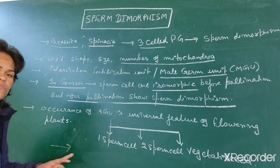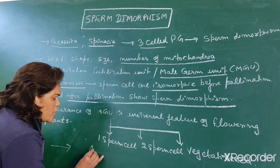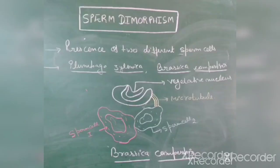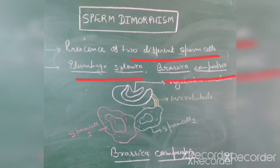Sperm dimorphism is also present in the case of aloe vera. Sperm dimorphism means the presence of two different sperm cells. These sperm cells may differ with respect to number, size, and shape of mitochondria. In the case of Plumbago zeylanica and Brassica campestris, there is presence of sperm dimorphism.